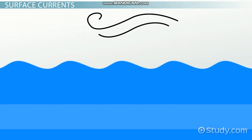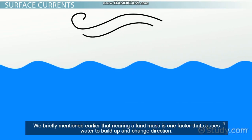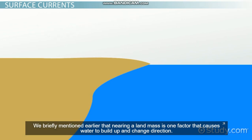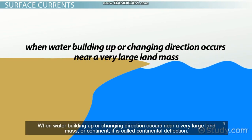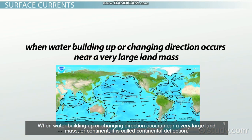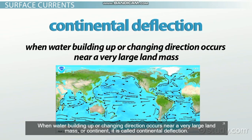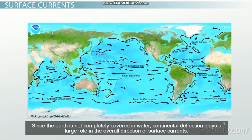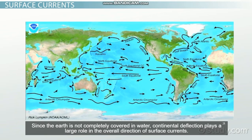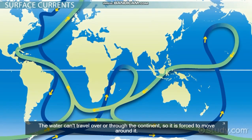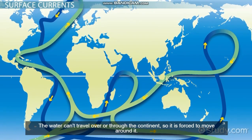Continental deflection. We briefly mentioned earlier that nearing a landmass is one factor that causes water to build up and change direction. When water building up or changing direction occurs near a very large landmass, or continent, it is called continental deflection. Since the Earth is not completely covered in water, continental deflection plays a large role in the overall direction of surface currents.